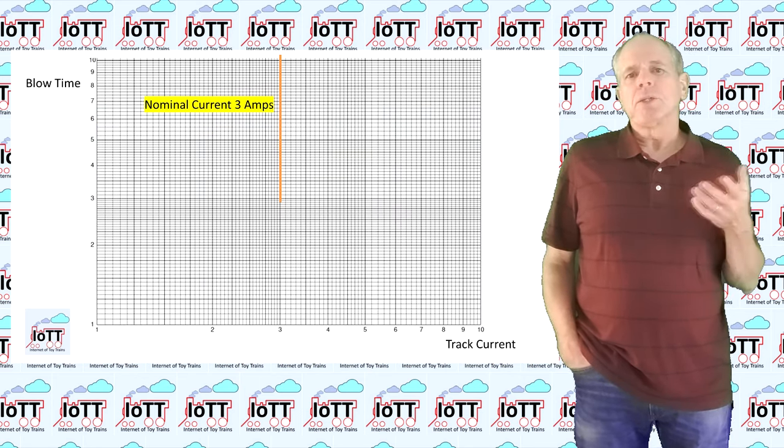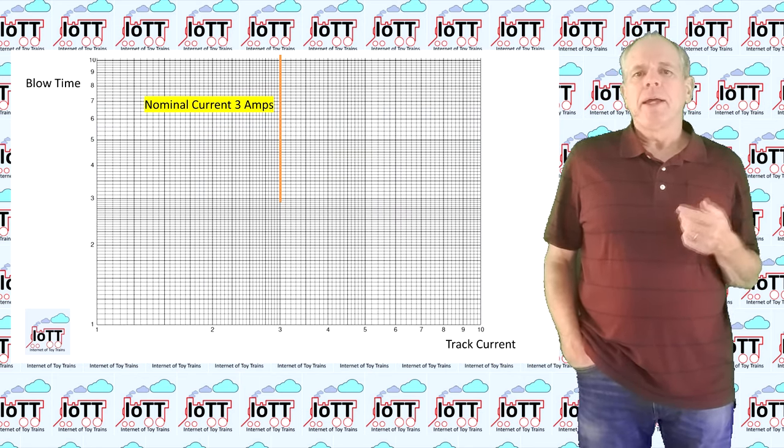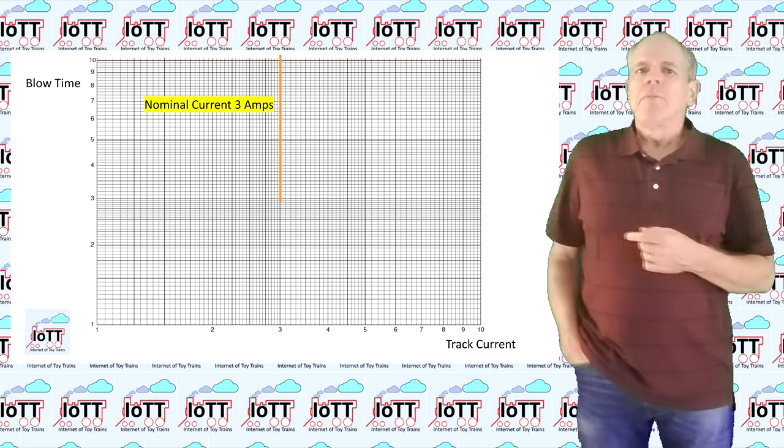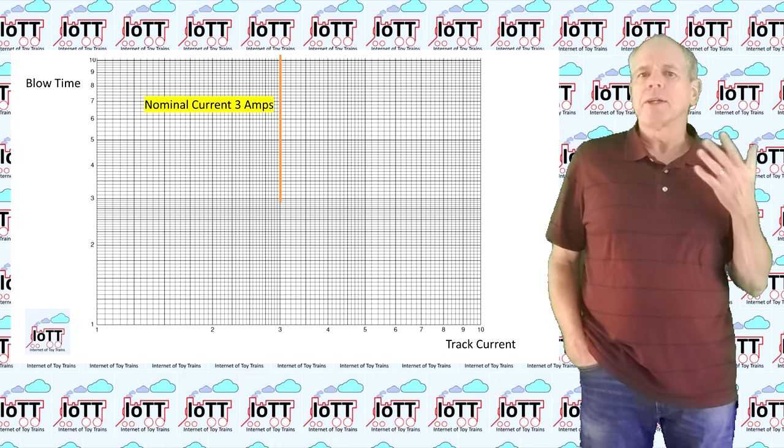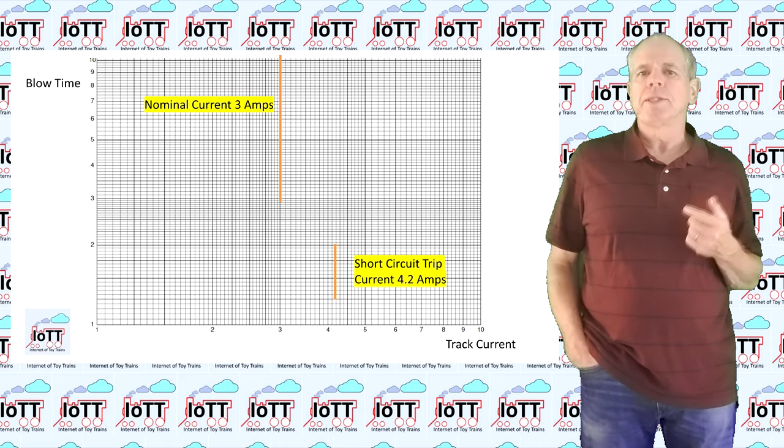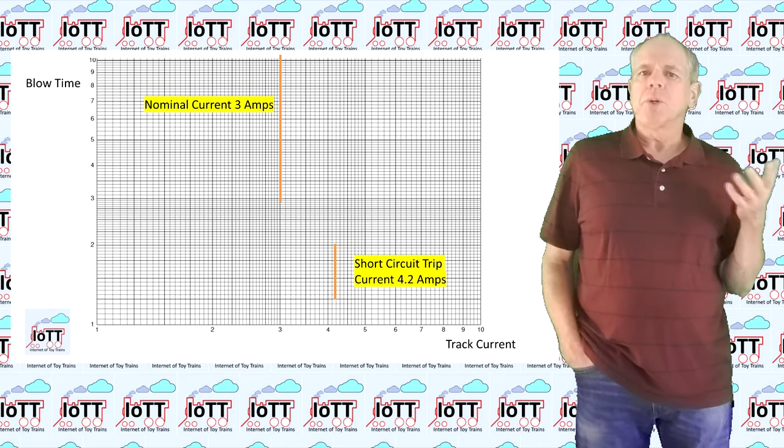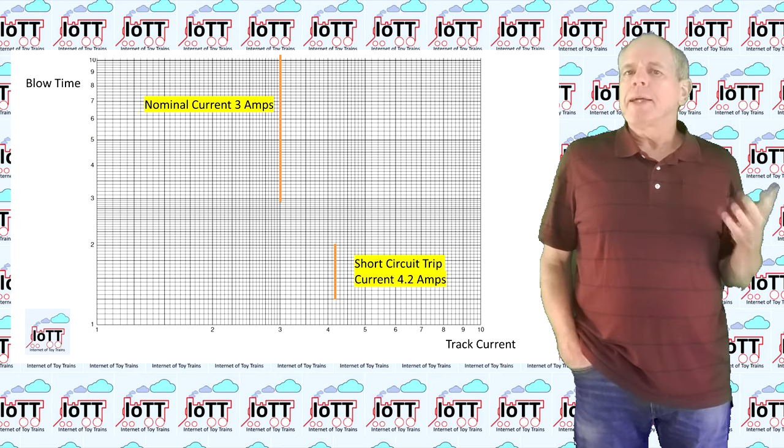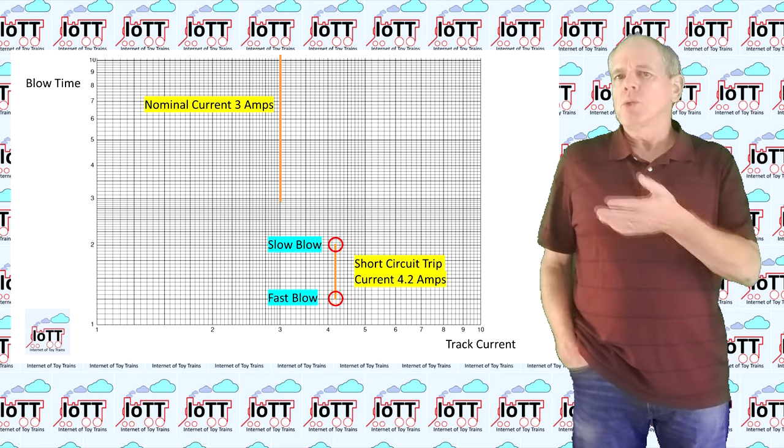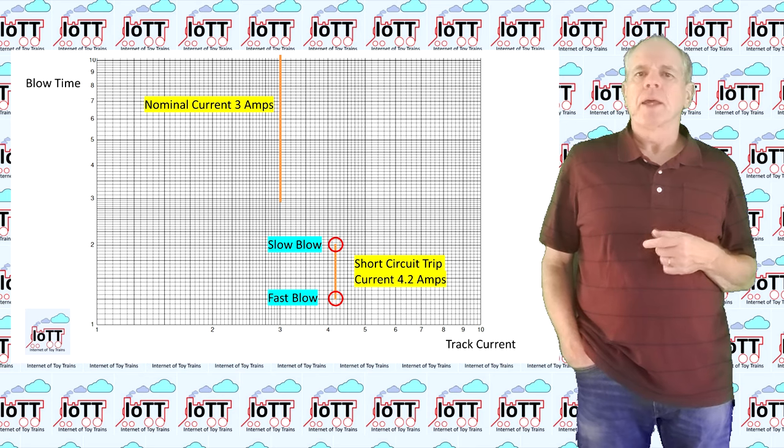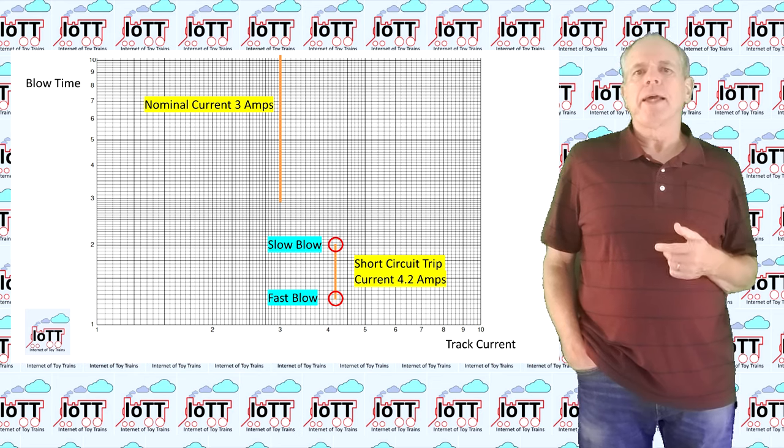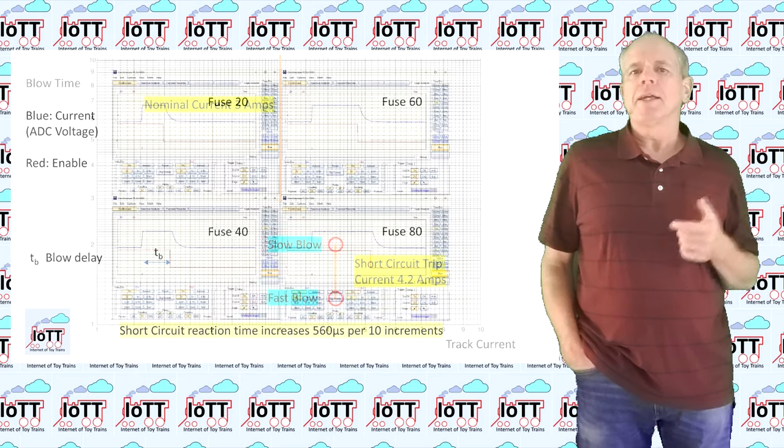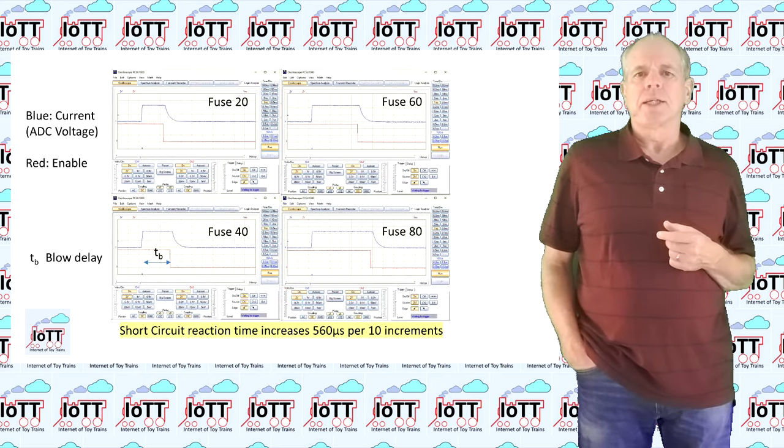If I put this into the TI diagram, it looks like this. Below the nominal current value, the fuse never blows and once the 140% trip value is reached, it blows with a programmable time delay, making it a slow, fast or super fast blow fuse. In my current Arduino implementation, it is possible to increase the blow delay time of the fuse in increments of 560 microseconds.